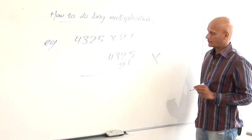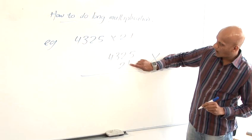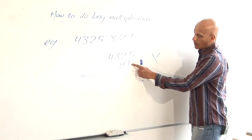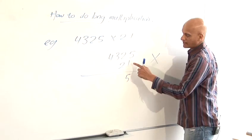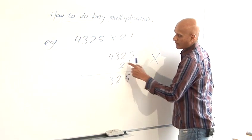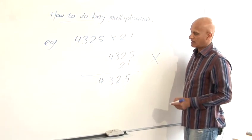I put a big multiply by there. Now first of all I'm going to just ignore that 2 and just take that 1 and multiply it by each of the digits in the 4325. So 1 times 5 is 5, 1 times 2 is 2, 1 times 3 is 3 and 1 times 4 is 4. So you see multiplying by 1 hasn't changed that number of course.